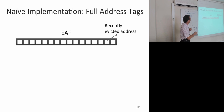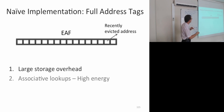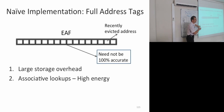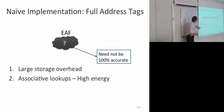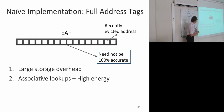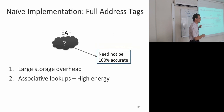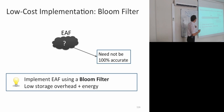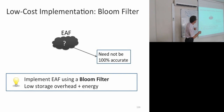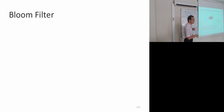A naive implementation would use full address tags for each evicted block, but this leads to large storage overheads and associative lookups. And since this is a predictor, you don't need 100% accuracy. Realizing this, you can implement the EAF as something much simpler — a Bloom filter — which has low storage overhead and low energy overhead.